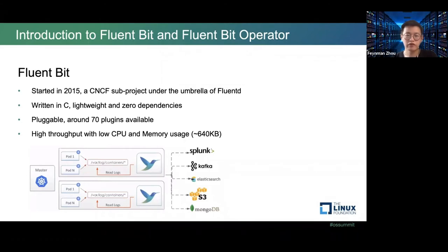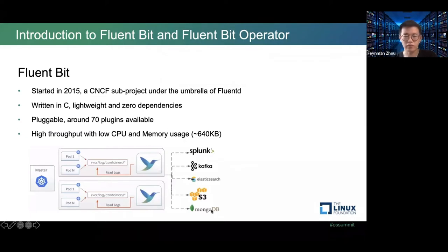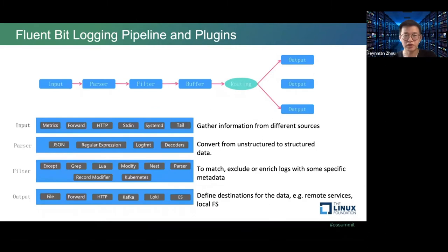FluentBit is now a CNCF subproject under the umbrella of the Fluent ecosystem. Because it is written in C, it is very lightweight with zero dependencies. It has around 70 plugins available — input, filter, output, and router plugins. You can also write your own plugins. FluentBit has only 640 KB, making it very low on CPU and memory usage. This is the general workflow for FluentBit in the Kubernetes ecosystem — you can use it to ship logs from Kubernetes pods to destinations like Kafka, Elasticsearch, and MongoDB.